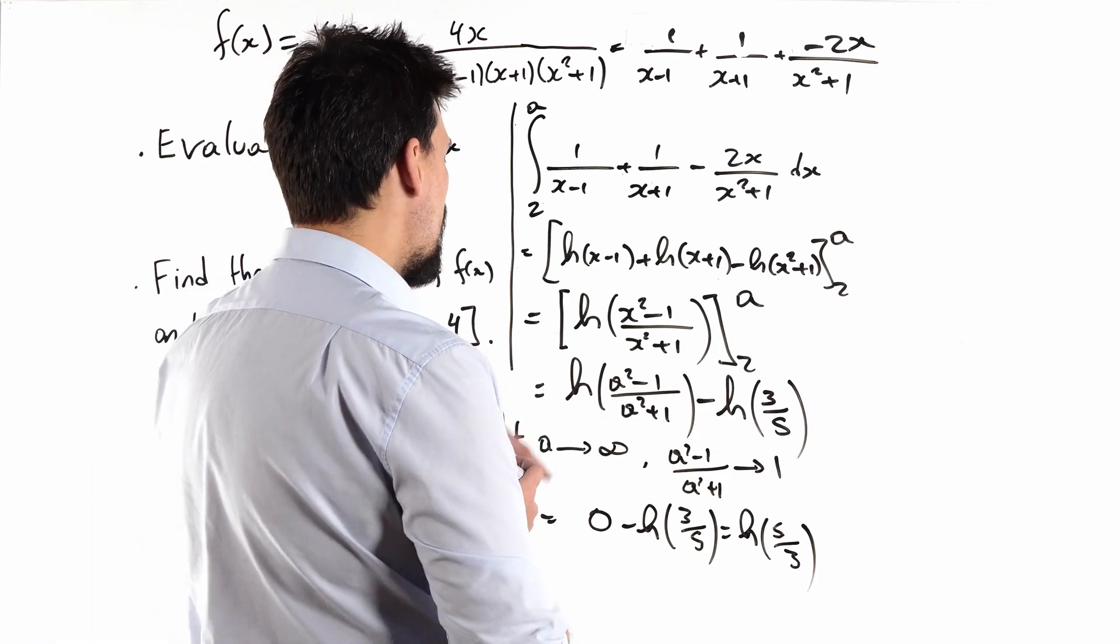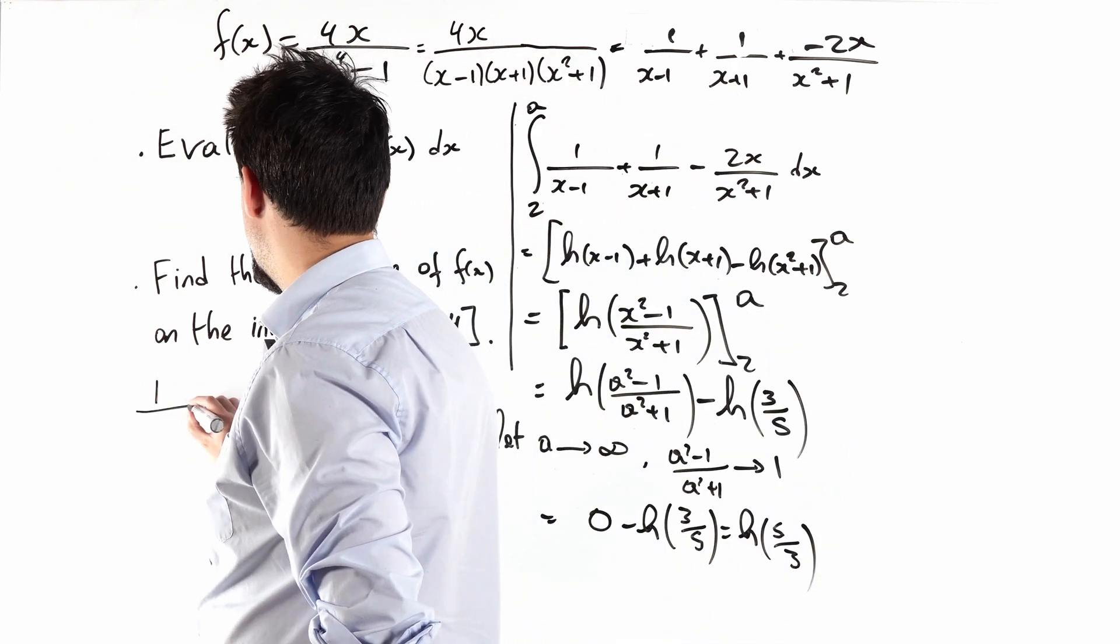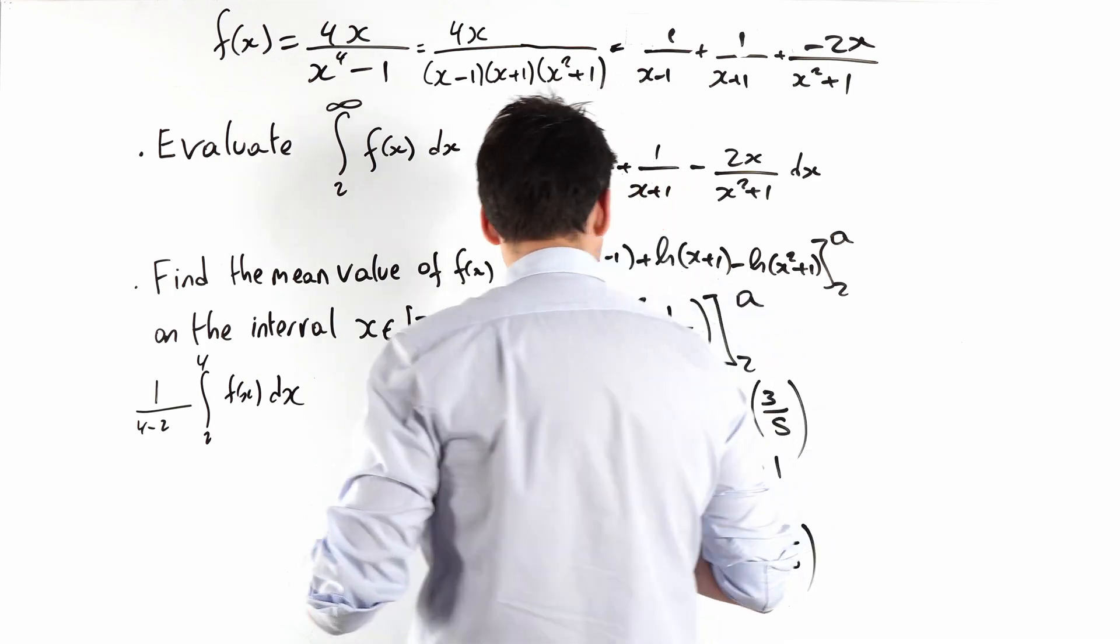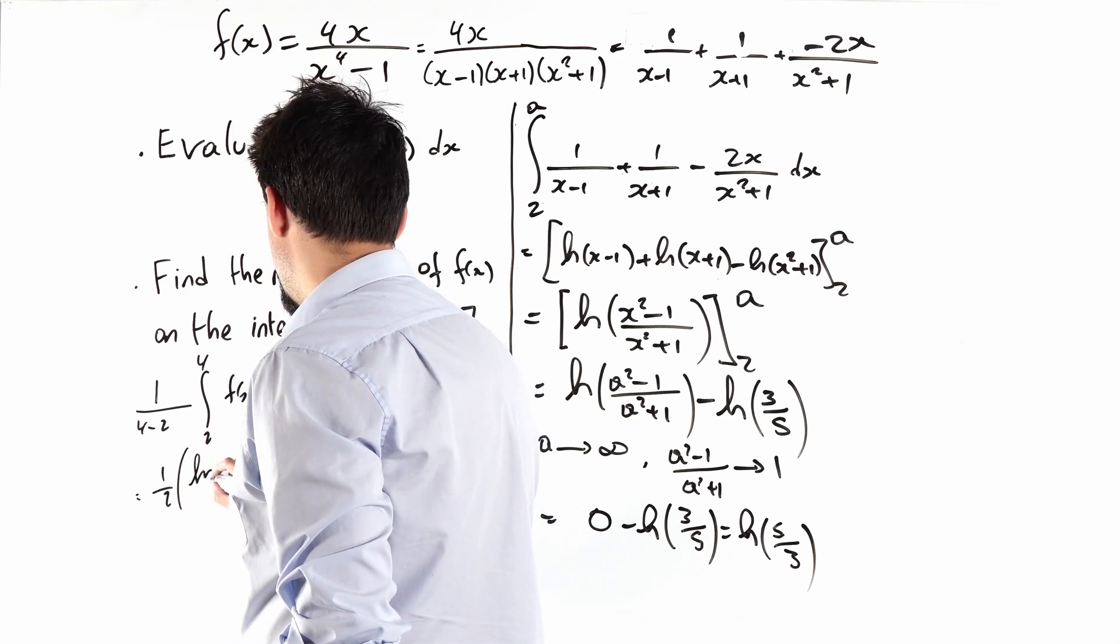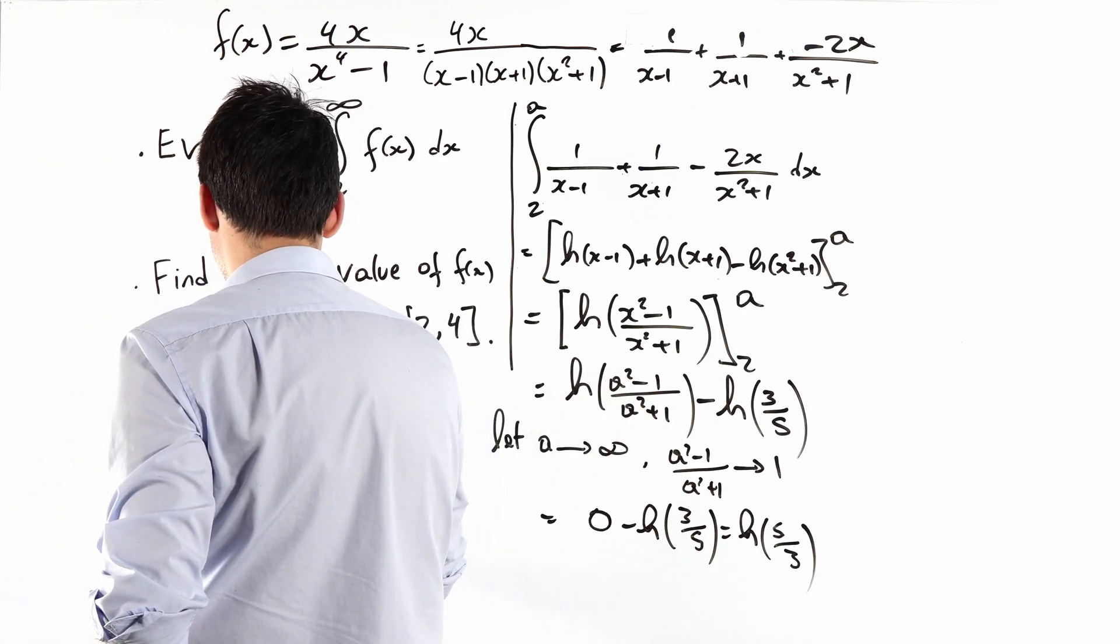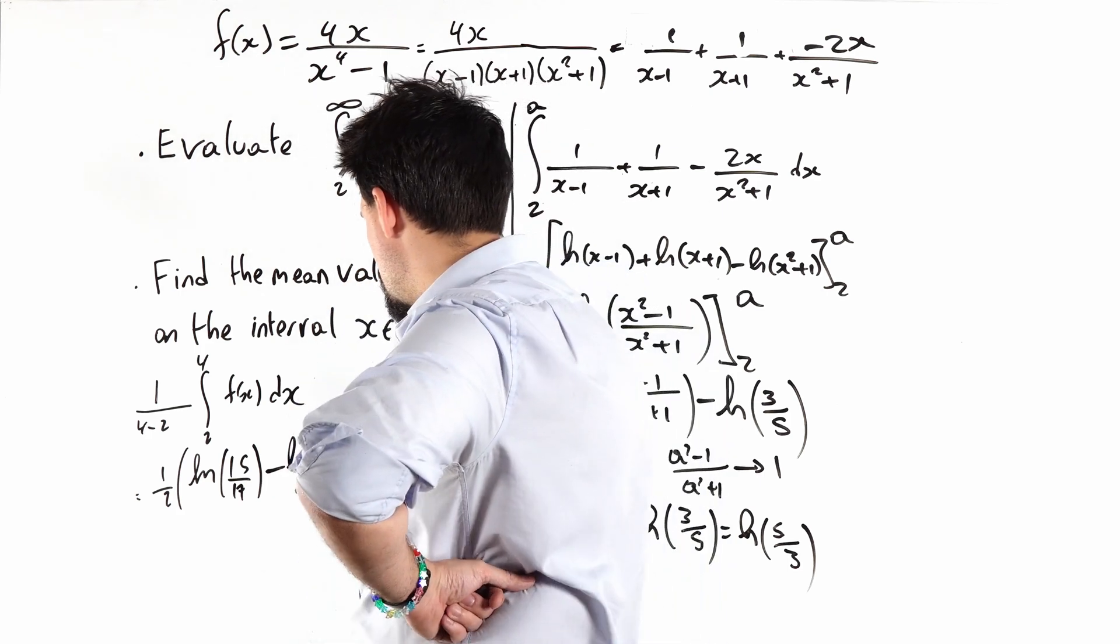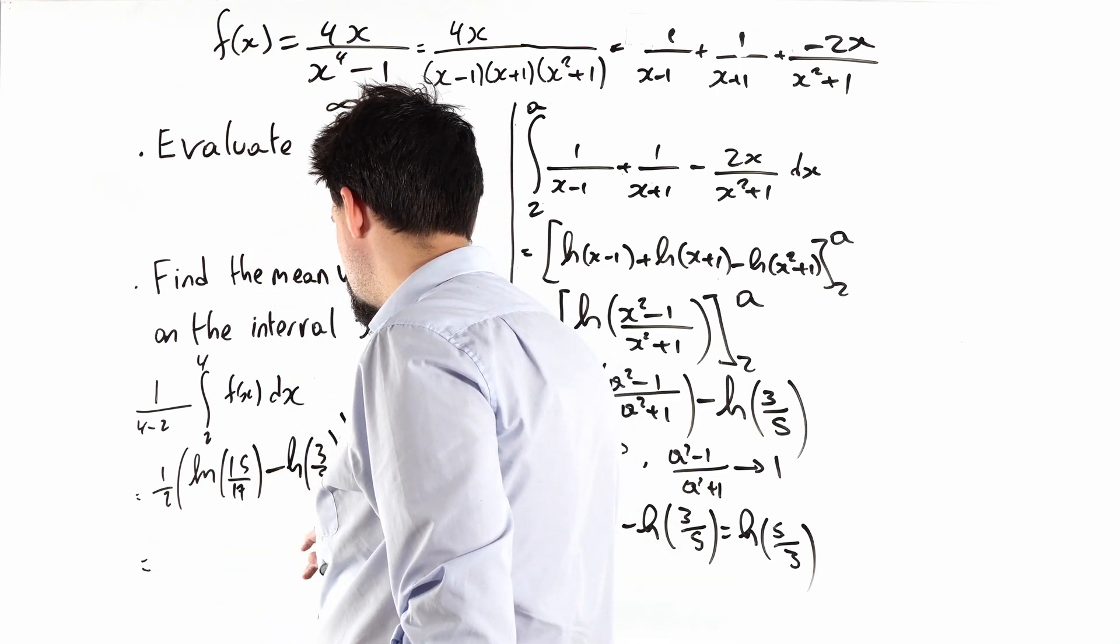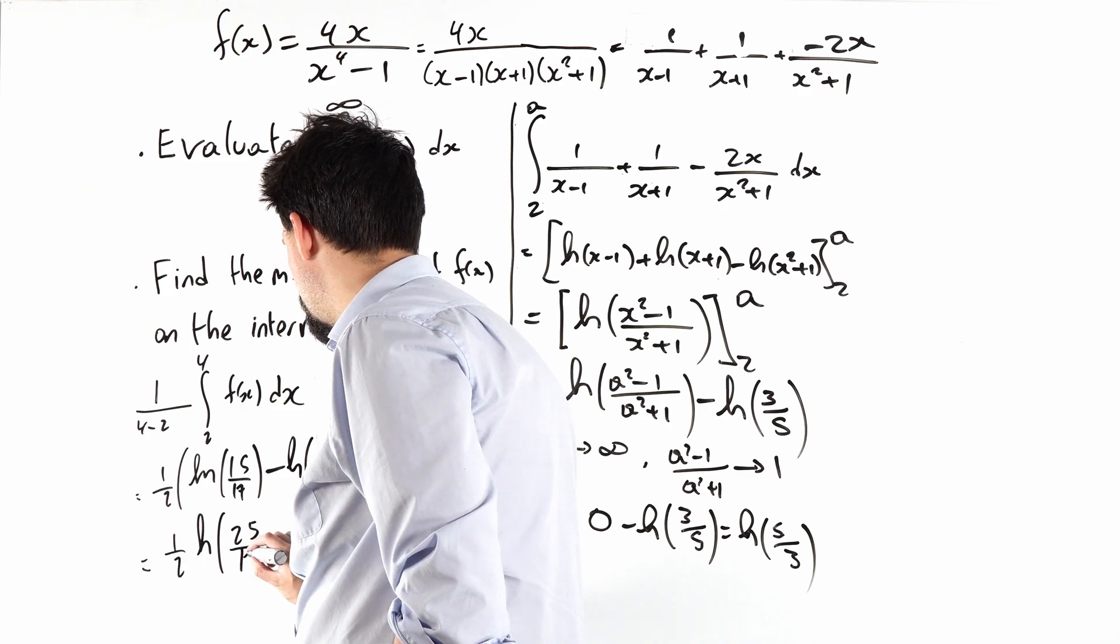Don't want to rub that out because it looks pretty. So let's go over here. Find the mean value of f of x between 2 and 4. Well, that will be 1 over 4 minus 2, the integral between 2 and 4 of f of x dx. Well, I can now just use this result with a is equal to 4, which is 1 half ln 15 over 17 minus ln of 3 fifths.